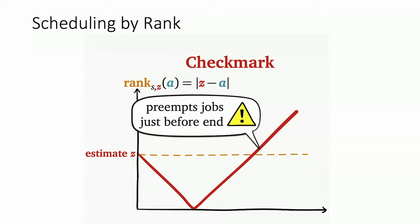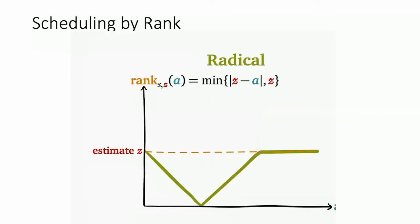One idea is that once your rank hits zero you start going back up again — the rank becomes the absolute value of the prediction minus the amount of service time. But there's a problem: once your rank goes just above your original rank, something new with the same rank could come in and preempt you even though you're almost about to finish. This can happen repeatedly.